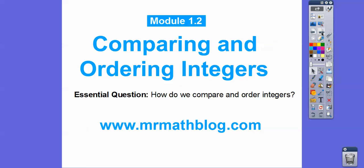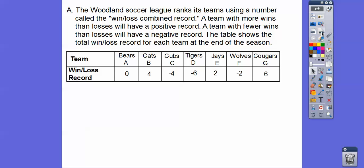So here's our question: how do we compare and order integers? The Woodland Soccer League ranks its teams using a number called the win-loss combined record. A team with more wins than losses will have a positive record, and a team with fewer wins than losses will have a negative record. The table shows the total win-loss record for each team at the end of the season.